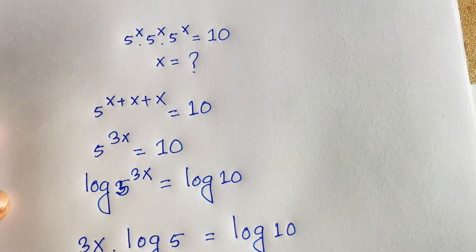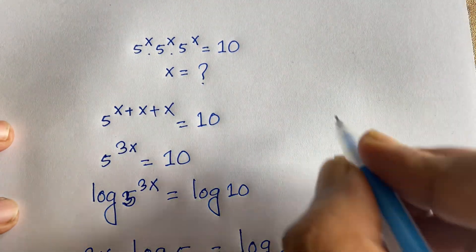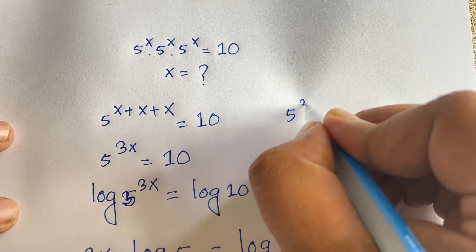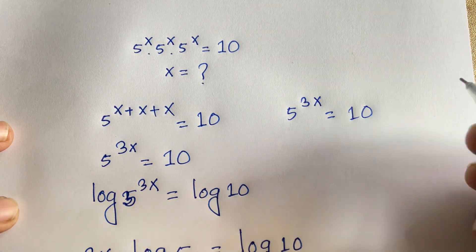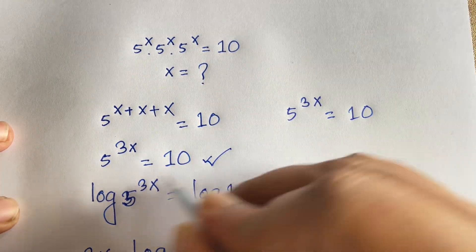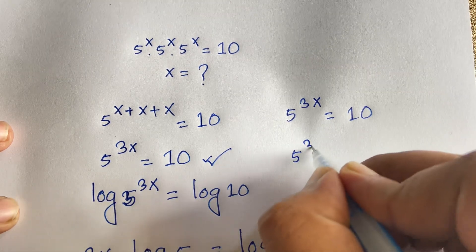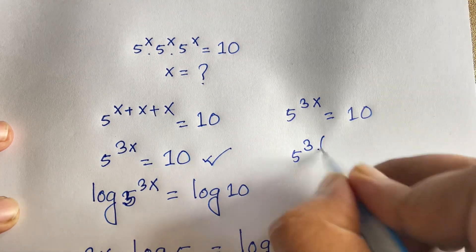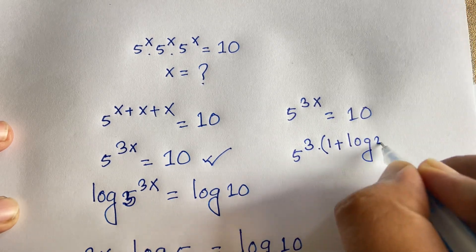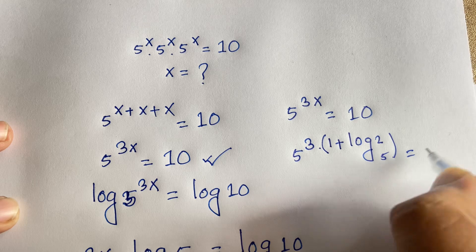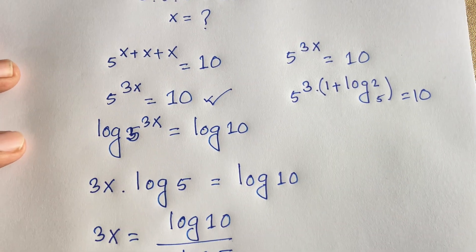Let's check our answer. The question is 5 to the power x times 5 to the power x times 5 to the power x, which equals 5 to the power 3x, equal to 10. Substituting, 3x equals 1 plus log base 5 of 2, so 5 to the power (1 plus log base 5 of 2) equals 10.